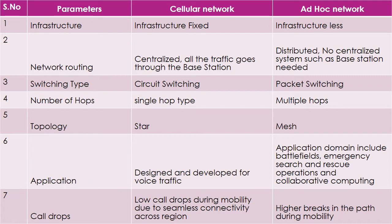Switching type: circuit switching in cellular network, packet switching in ad hoc network. Number of hops from source to destination: single hop in cellular, multiple hops in ad hoc. Topology: star topology in cellular, mesh topology in ad hoc. Applications: cellular networks are designed for commercial voice communication, while ad hoc networks are specifically used for battlefield, emergency search and rescue operations, and collaborative computing.